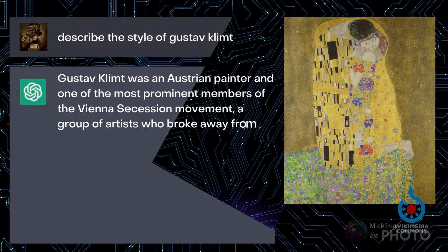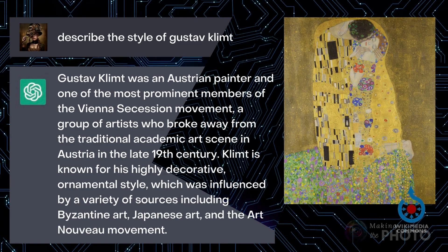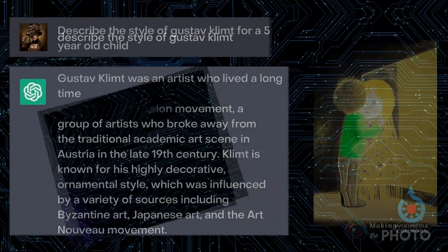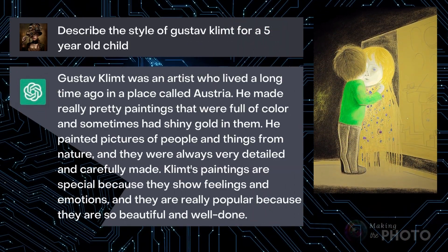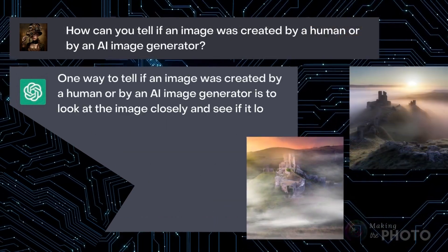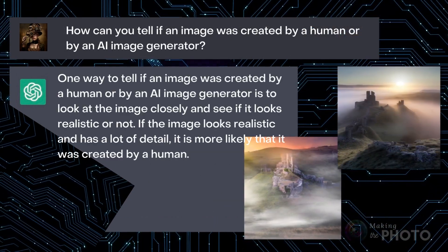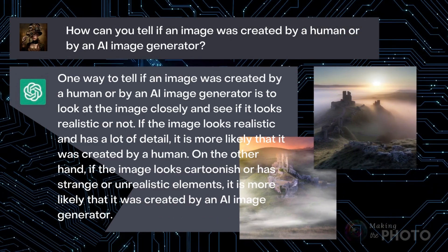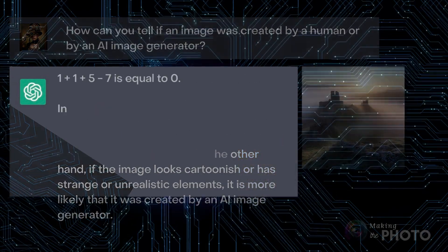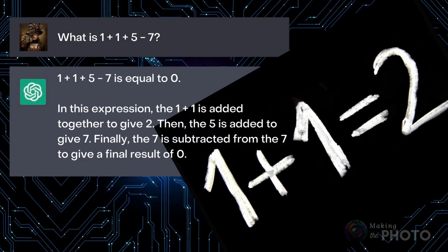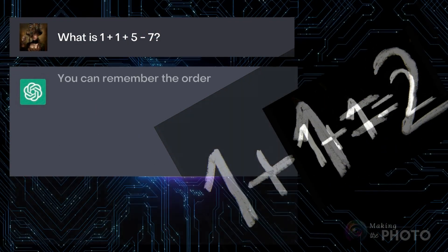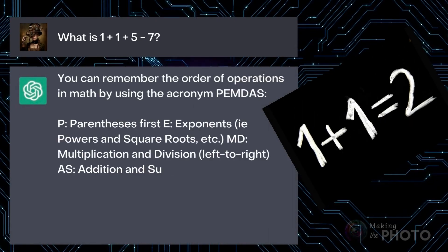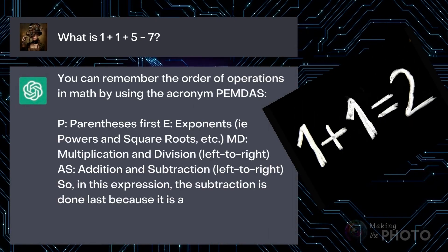ChatGPT can provide information and it can write in a variety of styles and at different age levels. It can even revise the answers in a different style. It can answer questions — both factual questions and more philosophical ones. It can do basic math, although it can sometimes get muddled. And it not only does the math, but it shows its work.